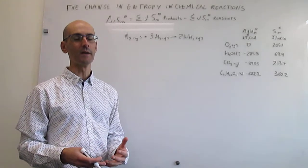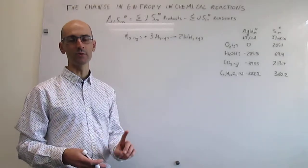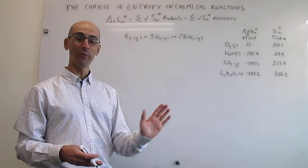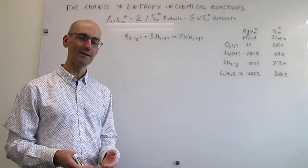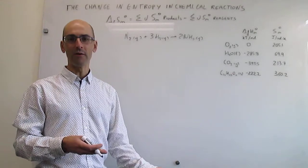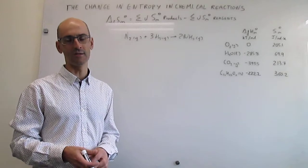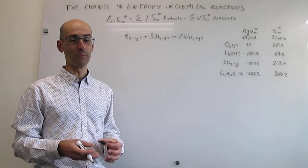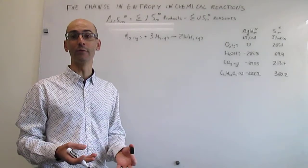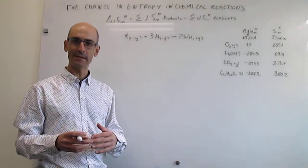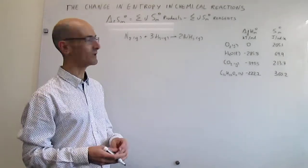As a general rule, because gases are more entropic than solids and liquids, when you look at a chemical reaction you have to look first at gases. If you have more moles of gas in products than in reagents, that's likely going to result in a positive change in entropy. If you have fewer moles of gas in products than in reagents, there should be a negative change in entropy. In some cases you'll have the same number of moles of gas, and then you have to think about something else. Now let's do an applied example to see how to put numbers into the equation.